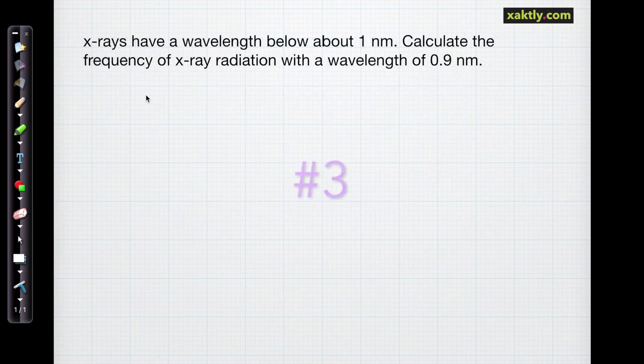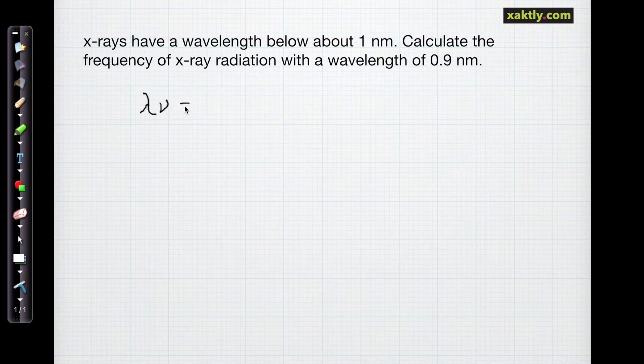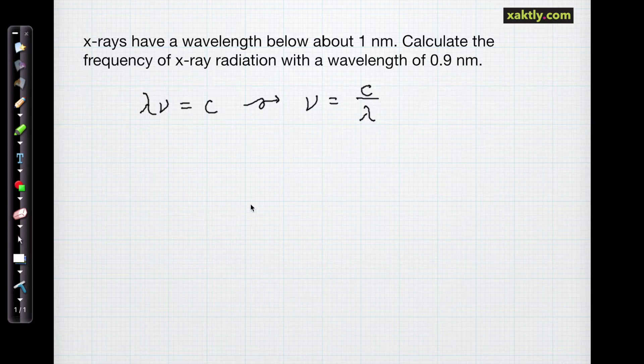And for our third problem let's calculate the frequency of some x-rays. X-rays that are about 0.9 nanometers in wavelength. So we'll solve our lambda nu times c expression again to calculate frequency. Frequency is c over lambda. And then we just have to plug in.